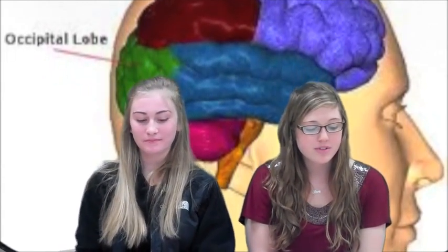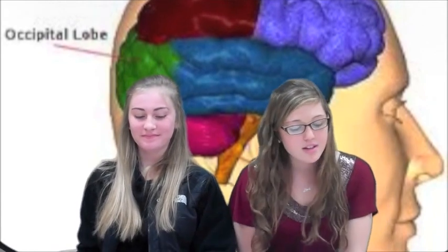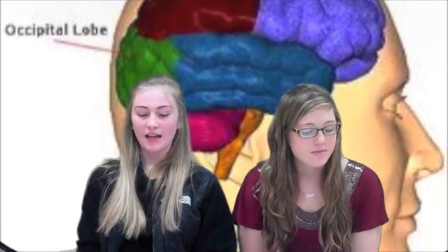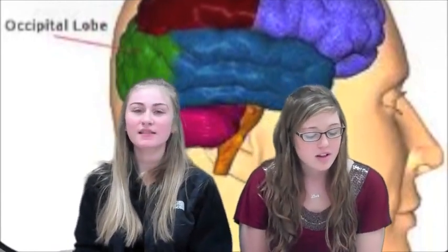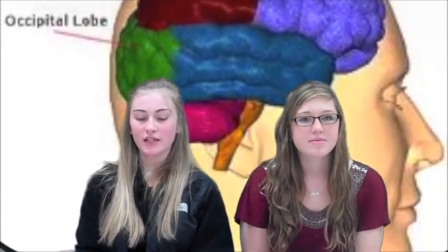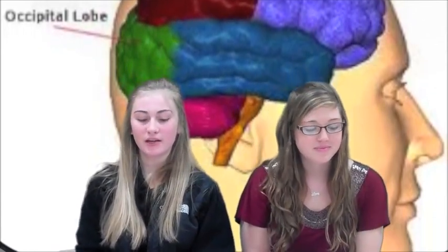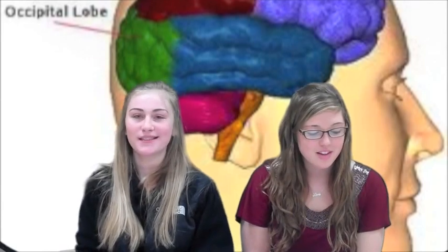The occipital lobe is responsible for visual processing and color recognition. It receives and processes information to help the brain interpret what a person sees.